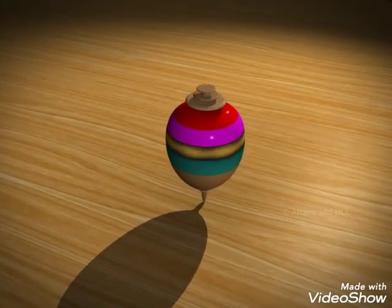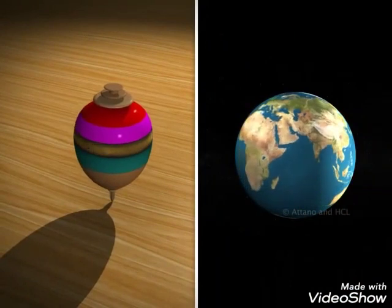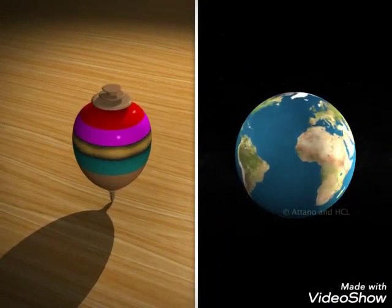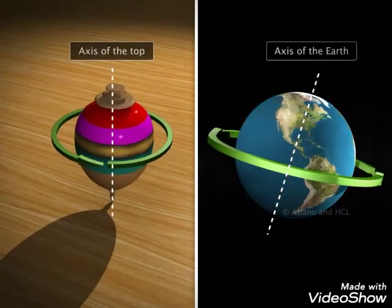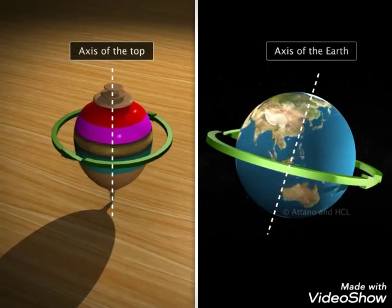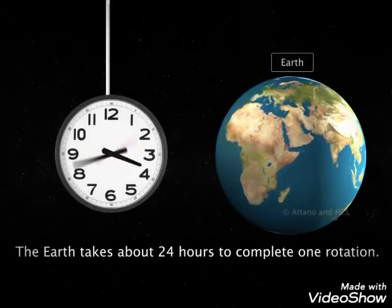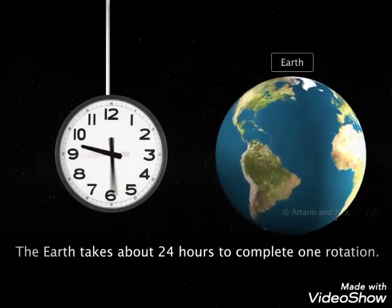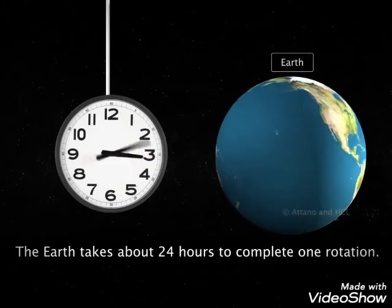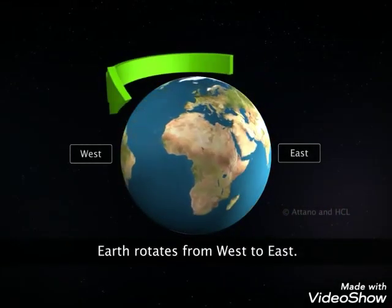Most of you must have seen a top — see how fast it spins. Just like a top, the earth too spins. The earth spins around an imaginary axis passing from north to south. This movement of the earth is called rotation. The earth takes around 24 hours to complete one rotation. Unlike the top, which can spin in any direction, the earth rotates from west to east only. In this picture I will show you that the earth rotates from west to east only. This is all about rotation.